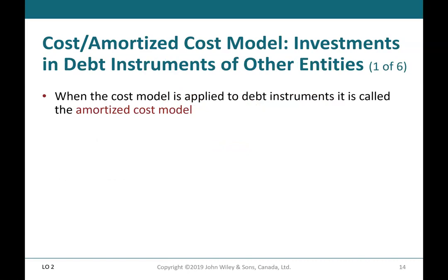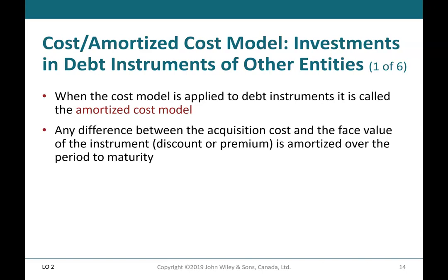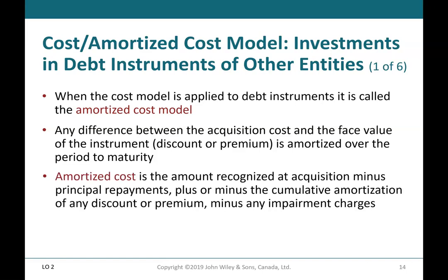Cost/amortized cost model — investments in debt instruments of other entities, Part 1 of 6. When the cost model is applied to debt instruments, it is called the amortized cost model. Any difference between the acquisition cost and the face value of the instrument — discount or premium — is amortized over the period to maturity. Amortized cost is the amount recognized at acquisition minus principal repayments, plus or minus the cumulative amortization of any discount or premium, minus any impairment charges.